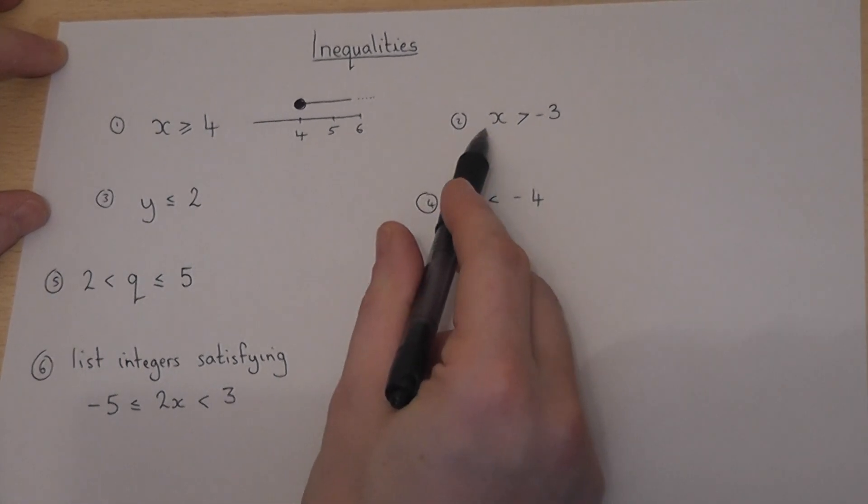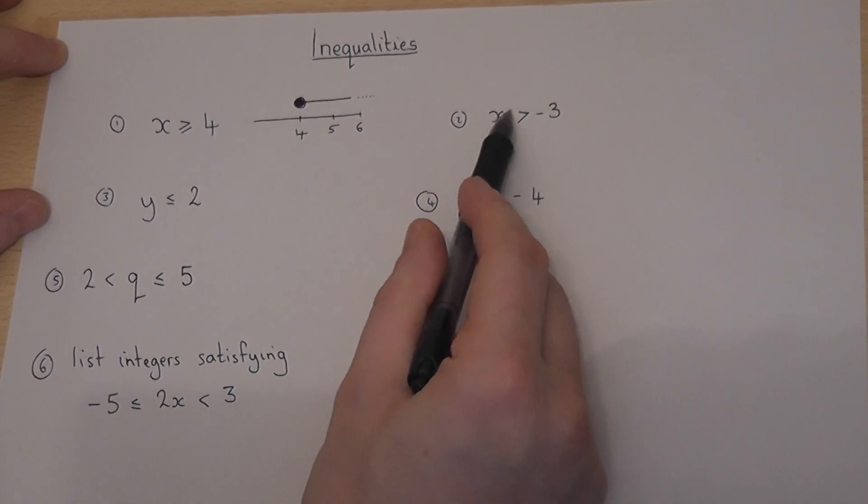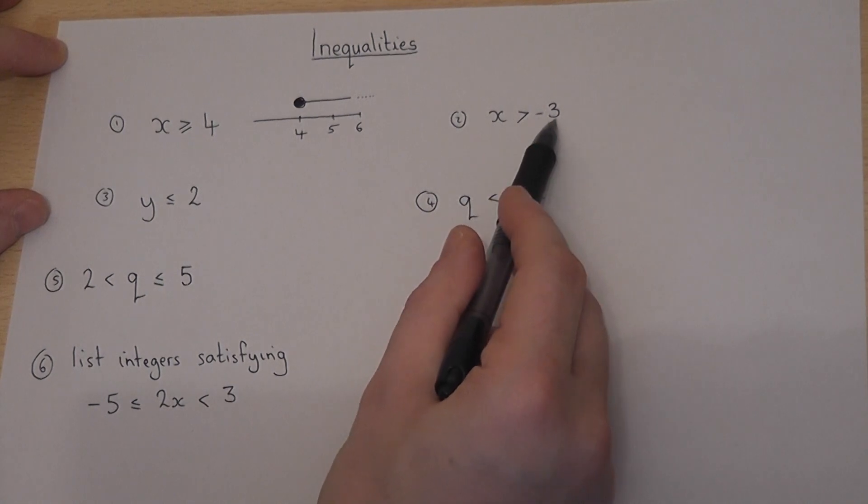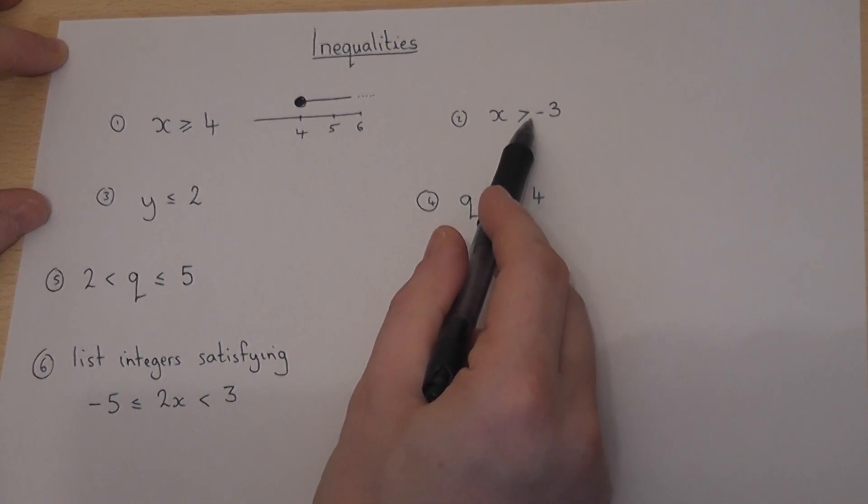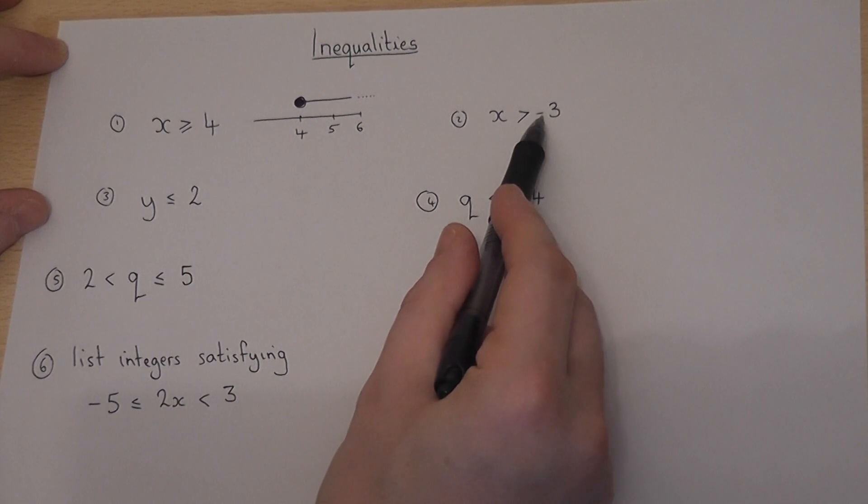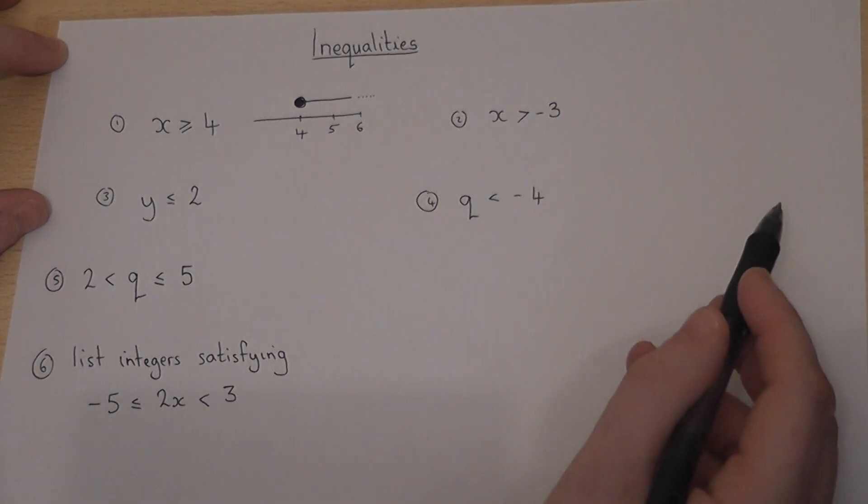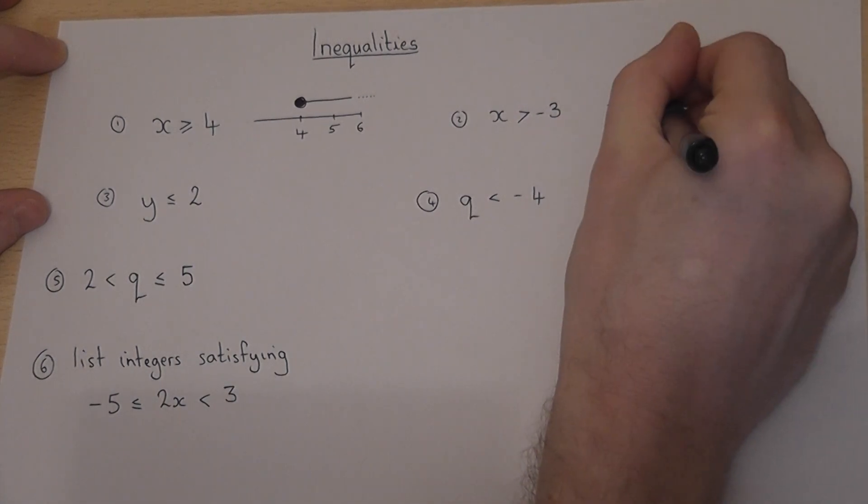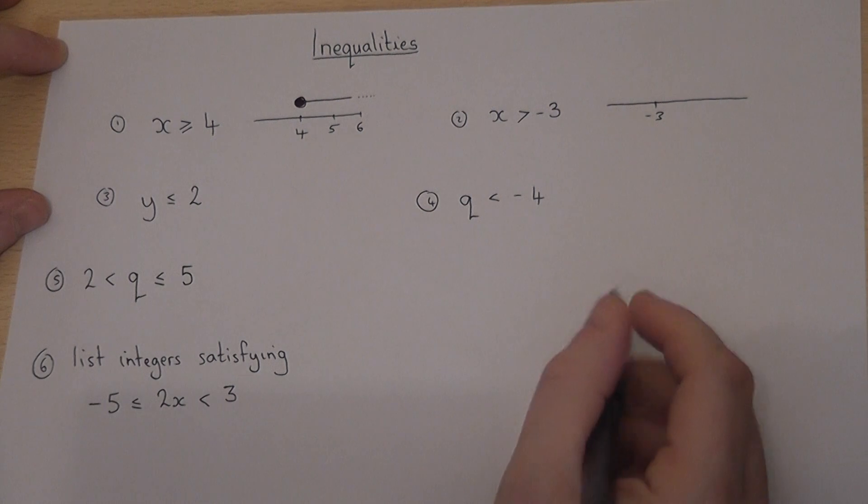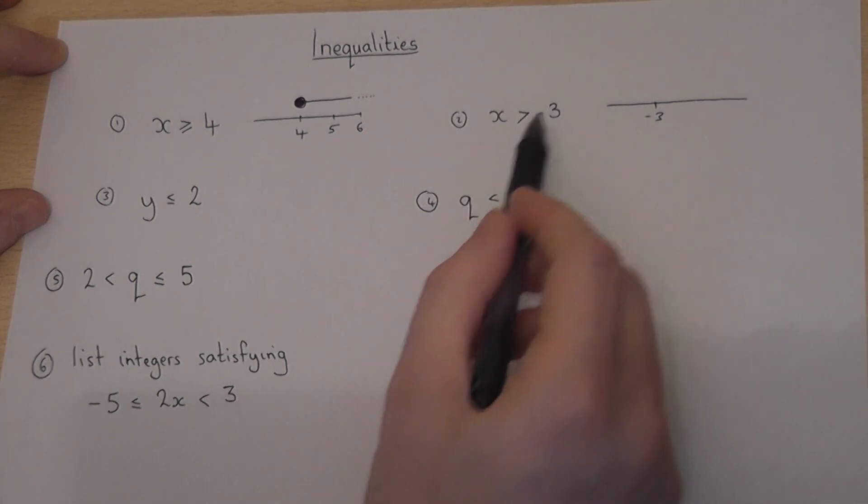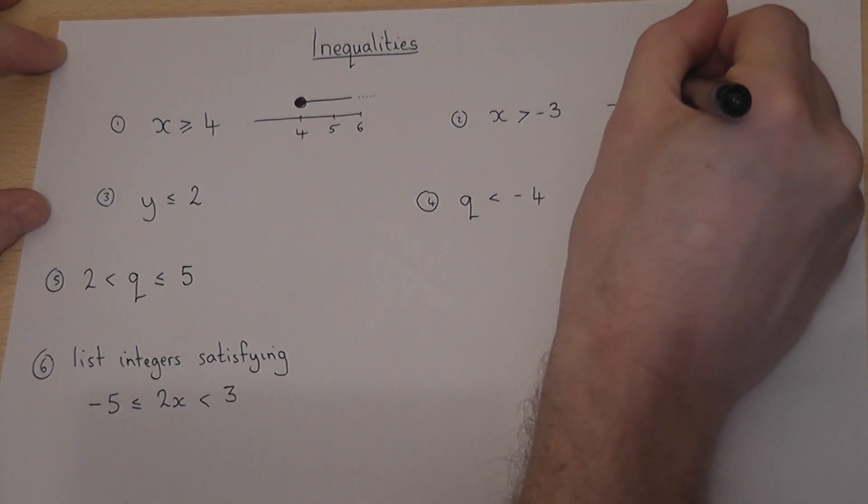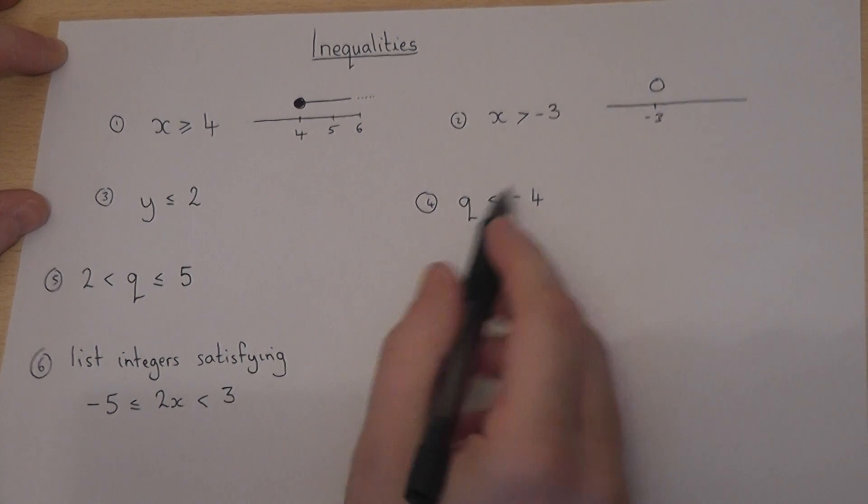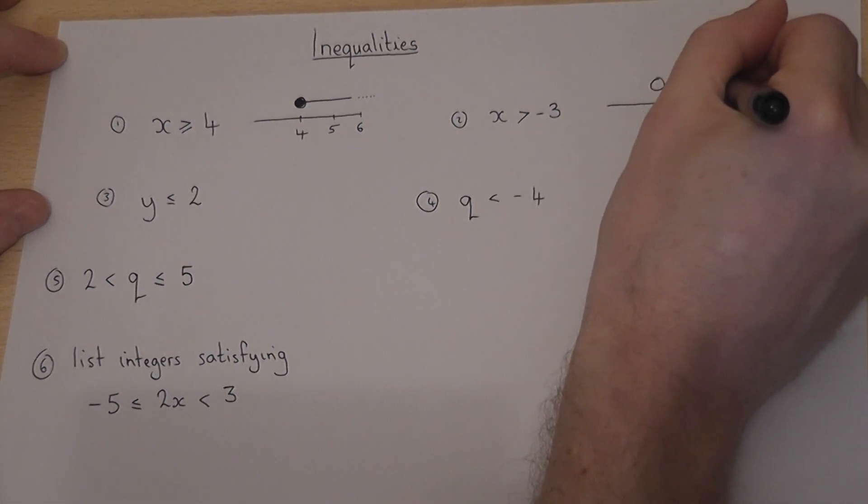Now, the second one is now x still bigger than a certain number, which is minus 3, but we can no longer include minus 3. So x is any number which is strictly bigger than minus 3. So if I draw another number line and put minus 3 on there, because we can no longer include minus 3, I use an open circle. But I'm still larger than, so I go to the right.